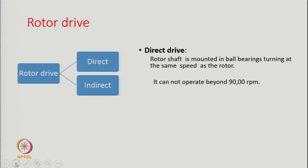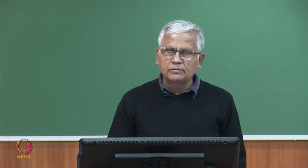Self-suction rotors could not succeed, and we now all use external suction rotors. Regarding the rotor drive, it could be of two types: direct drive or indirect drive. In direct drive, the rotor shaft is mounted in ball bearings turning at the same speed as the rotor itself — the rotor shaft is connected directly to the motor. However, these cannot operate beyond 90,000 RPM, so this kind of drive has a limitation.